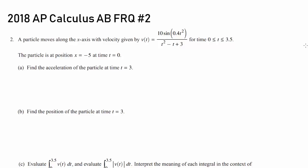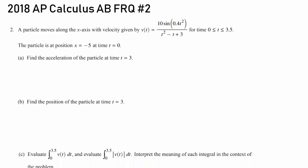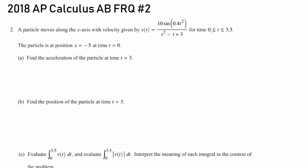It's time for number 2 on Calculus AB. A particle is moving along the x-axis with the velocity given by this function for time between 0 and 3.5. The particle is at position x of negative 5 at time t equals 0, so they are giving us the initial position.